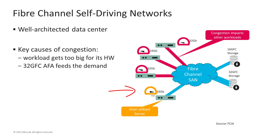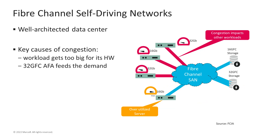Problems arise when workloads are added to a server that drive utilization to the max. This can cause an over-utilized server to clog up the SAN and create congestion. The noisy neighbor server limits access of other servers to the storage — most problematic with mixed-speed devices, such as a 16-gig HPA talking to a 32-gig storage array. Fiber Channel uses a finite number of buffer credits to ensure in-order frame delivery, so a slow host married to a fast target will consume a large quantity of buffer credits, slowing down other devices in the SAN.